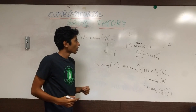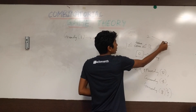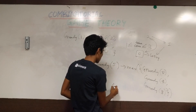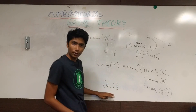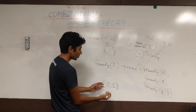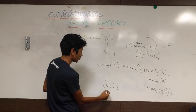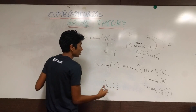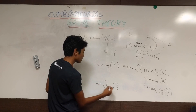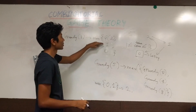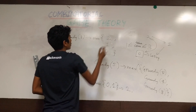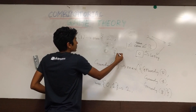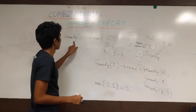Grundy of 2: with 2 coins you can go to state 1 or state 0, so your set is {Grundy(1), Grundy(0)} = {1, 0}. MEX of {0, 1} is 2, so Grundy of 2 equals 2. Then Grundy of 3 is MEX of {Grundy(2), Grundy(1), Grundy(0)} = MEX of {2, 1, 0} = 3. So Grundy of 3 equals 3.